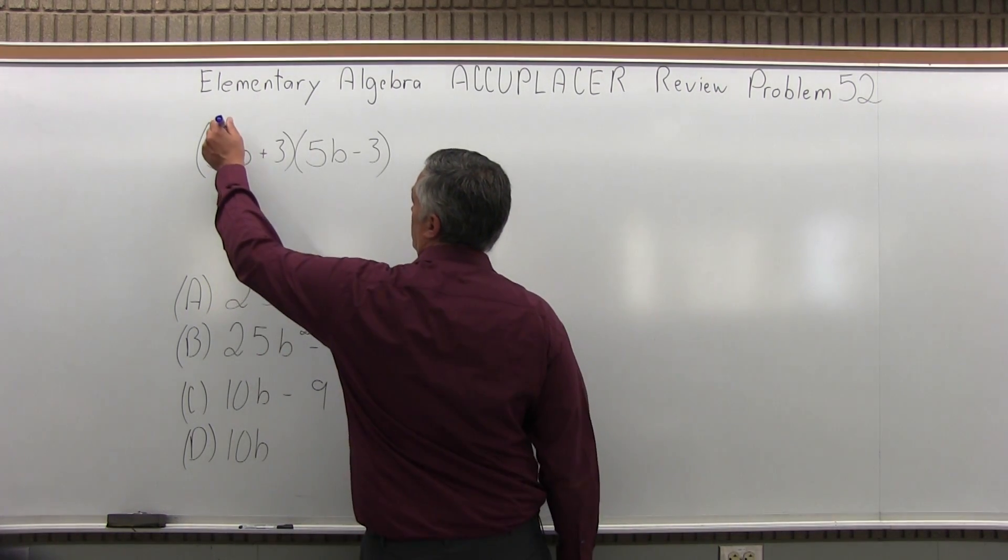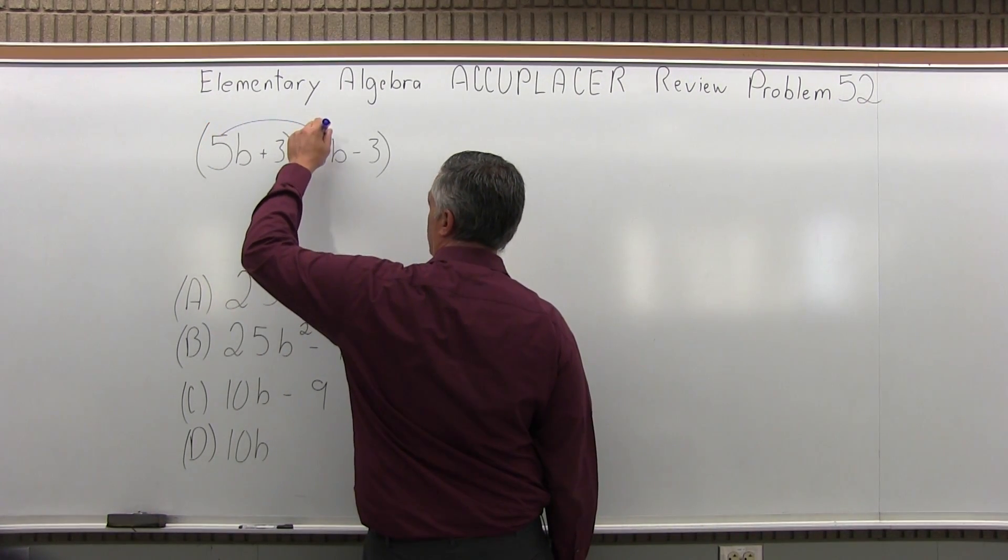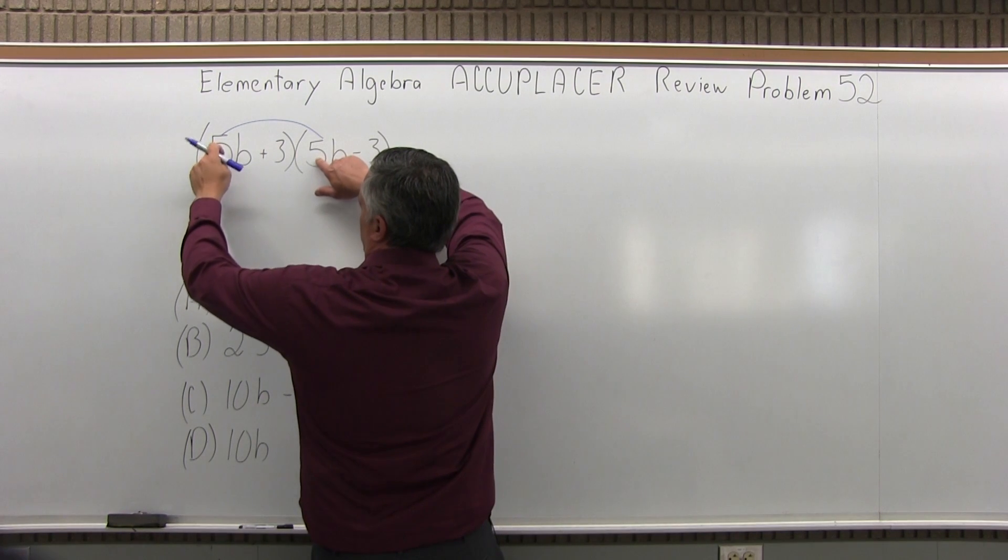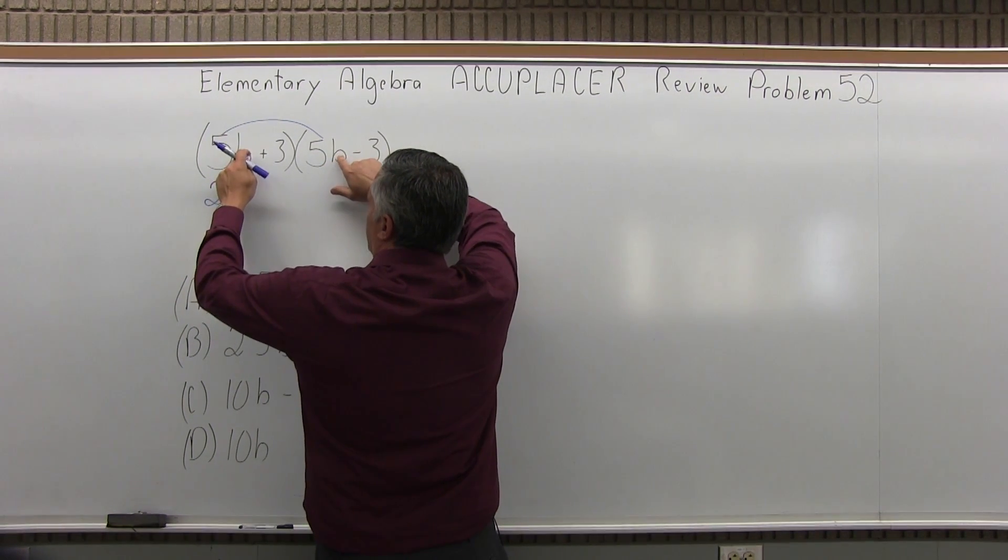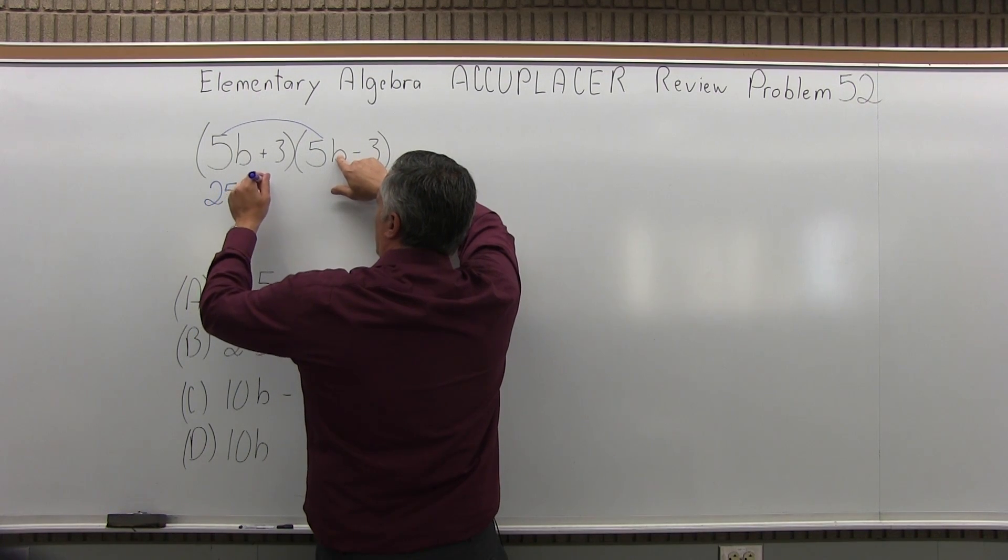Let's multiply 5B times 5B. Multiplying the numbers, 5 times 5 is 25, and don't forget B times B would be B² or B squared.